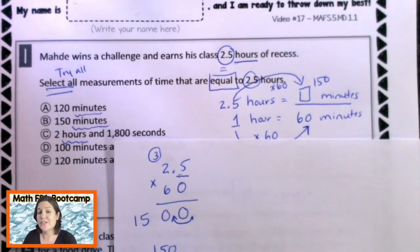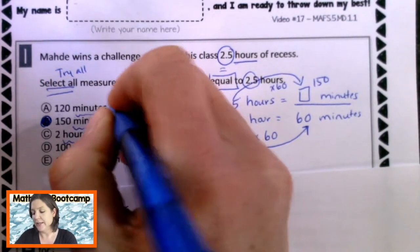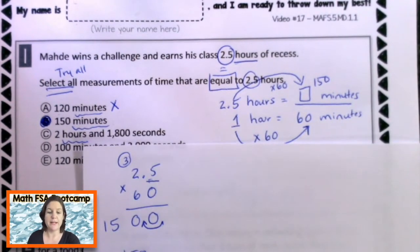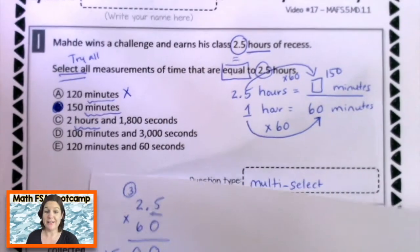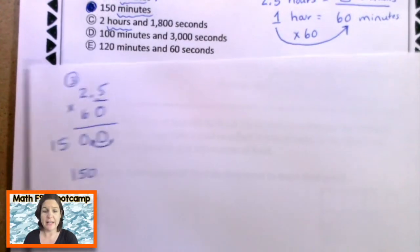Which answer choice do we need to mark? B. And we can eliminate A, because we just tried it. And we definitely got 150 minutes. So, that's a long time, Maddie, getting your class that much recess. But we still have more choices to take a look at.